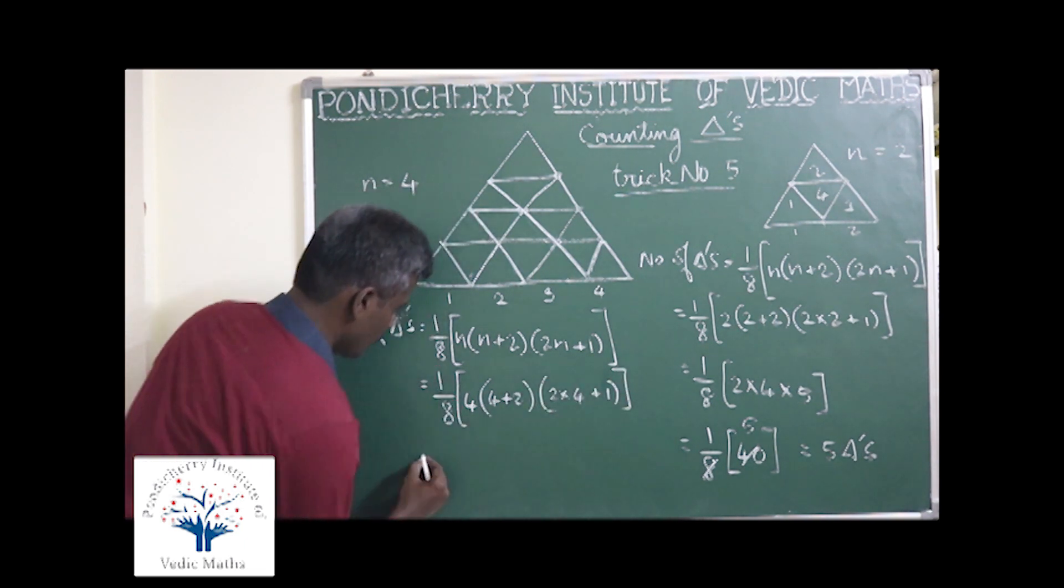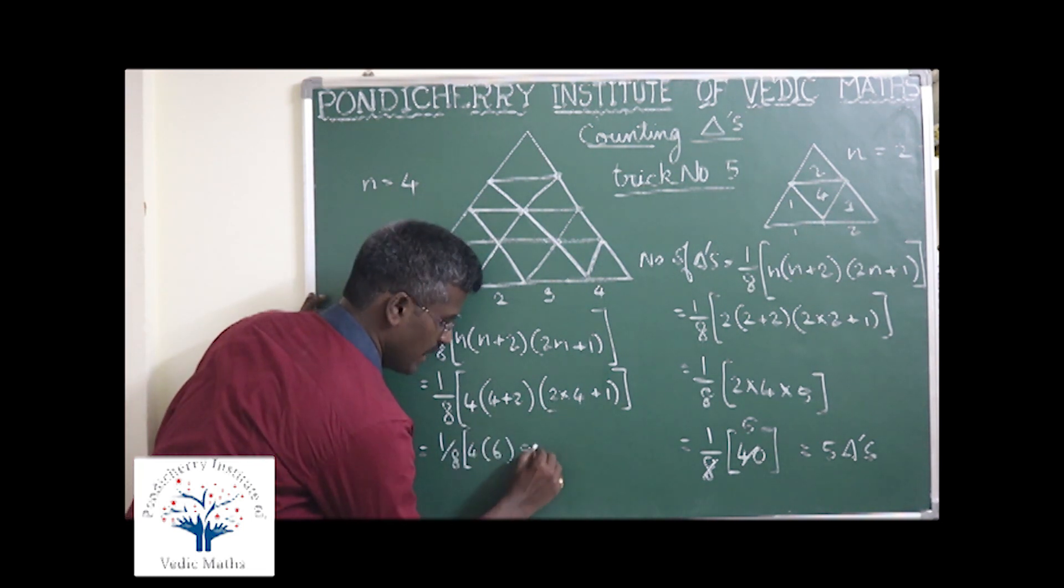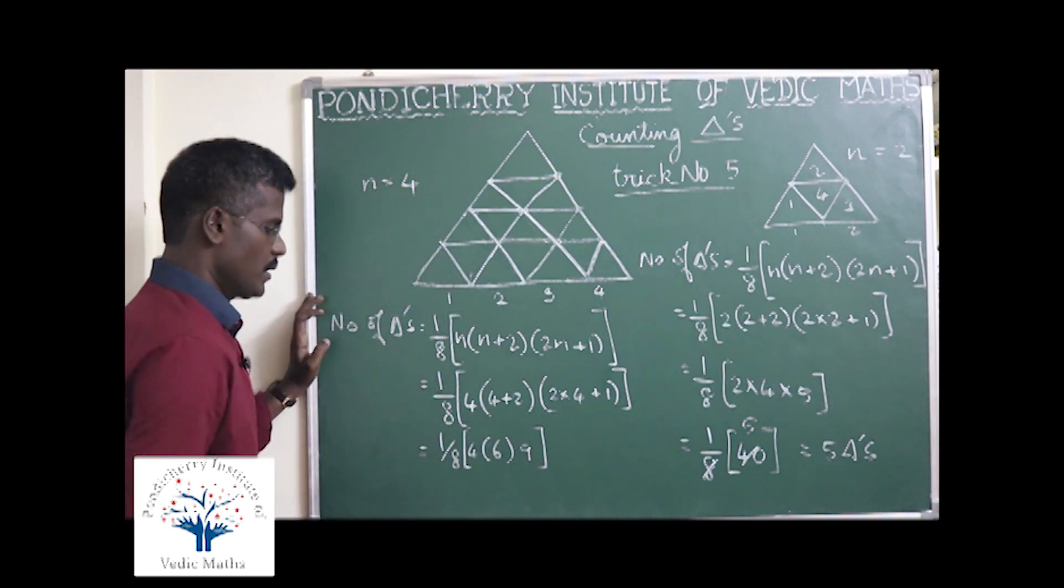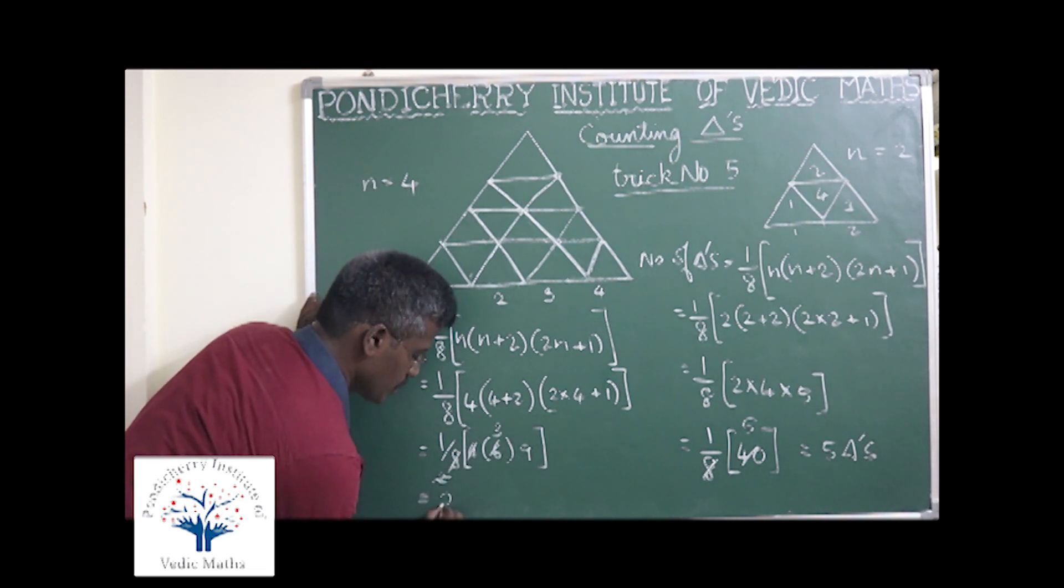So 1 by 8 into 4 into 4 into 6 into 4 into 9, which is equal to 2 and this is going to be 3. So totally 27 triangles.